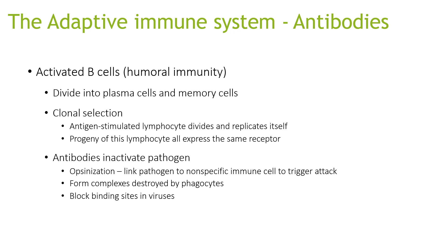Activated B cells are involved in humoral immunity. They divide into plasma cells and memory cells. This is involved in a process called clonal selection, where an antigen-stimulated lymphocyte divides and replicates itself, and the progeny all express the same receptor. Antibodies can inactivate pathogens in a process called opsonization, which links the pathogen to nonspecific immune cells to trigger attack, forming complexes destroyed by phagocytes and blocking binding sites on viruses.